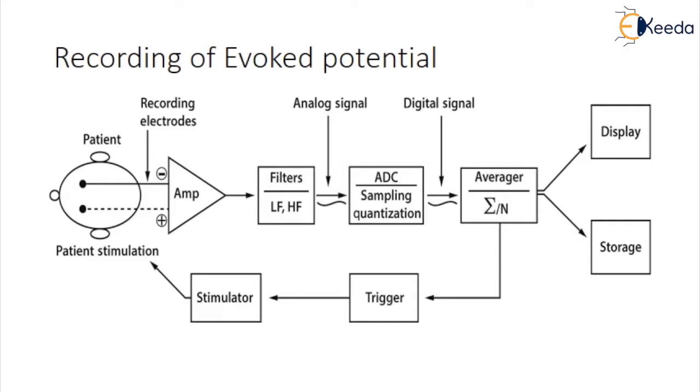The evoked potentials are generally superimposed with the electroencephalogram. Therefore, it is necessary to remove the EEG by an averaging technique while making evoked potential measurement.